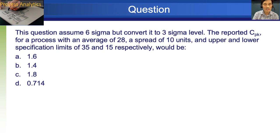Next question. The question assumes six sigma and converts it to three sigma level. The reported CPK for a process with an average of 28, a spread of 10 units and upper and lower specification limits of 35 and 15 respectively would be. So this one requires us to calculate CPK. So we know that CPK formula is USL minus X bar over three sigma. So if we put this formula into it, at six sigma level, the spread is 10. Then at three sigma, it is five. Therefore, CPK will be 35 minus 28 over five and it gives us 1.4.